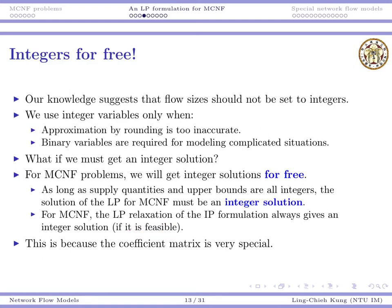So, that means the coefficient matrix must have some properties. Otherwise, we don't have this. In general, certainly, this is not true. In general, this is not true. Otherwise, we don't need branch and bound. Now, it's possible that the LP relaxation gives fractional solutions. But, with MCNF problems, because the coefficient matrix is so special, we must get integer solutions. Below, I'm going to tell you why.